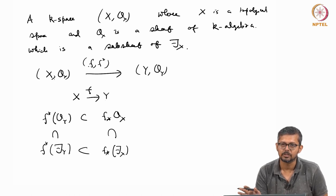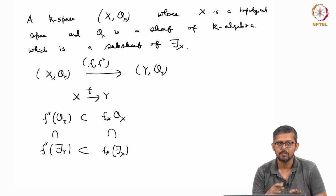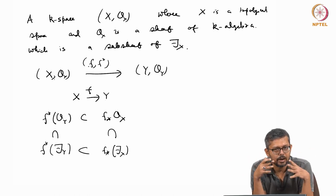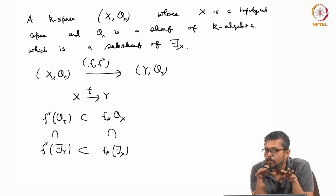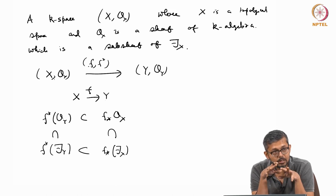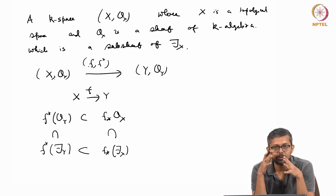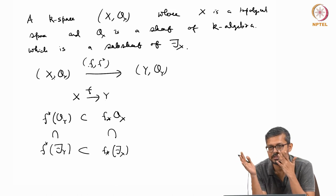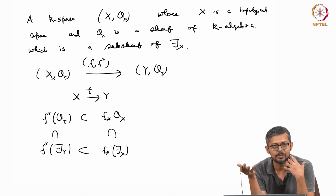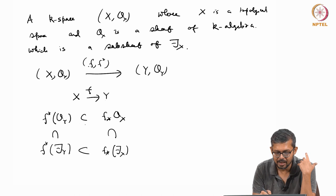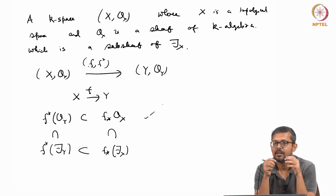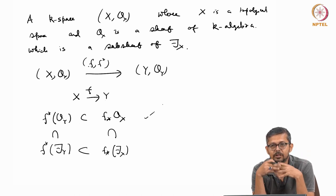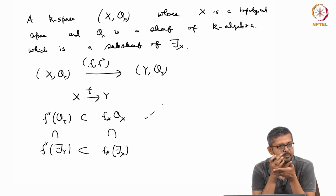Regular functions go to regular functions under pullback. A map of varieties - affine or otherwise - is not just a map of topological spaces: it also involves a map of functions. The key point, stated sheaf-theoretically, is that it sends regular functions to regular functions. That is how you define a morphism.